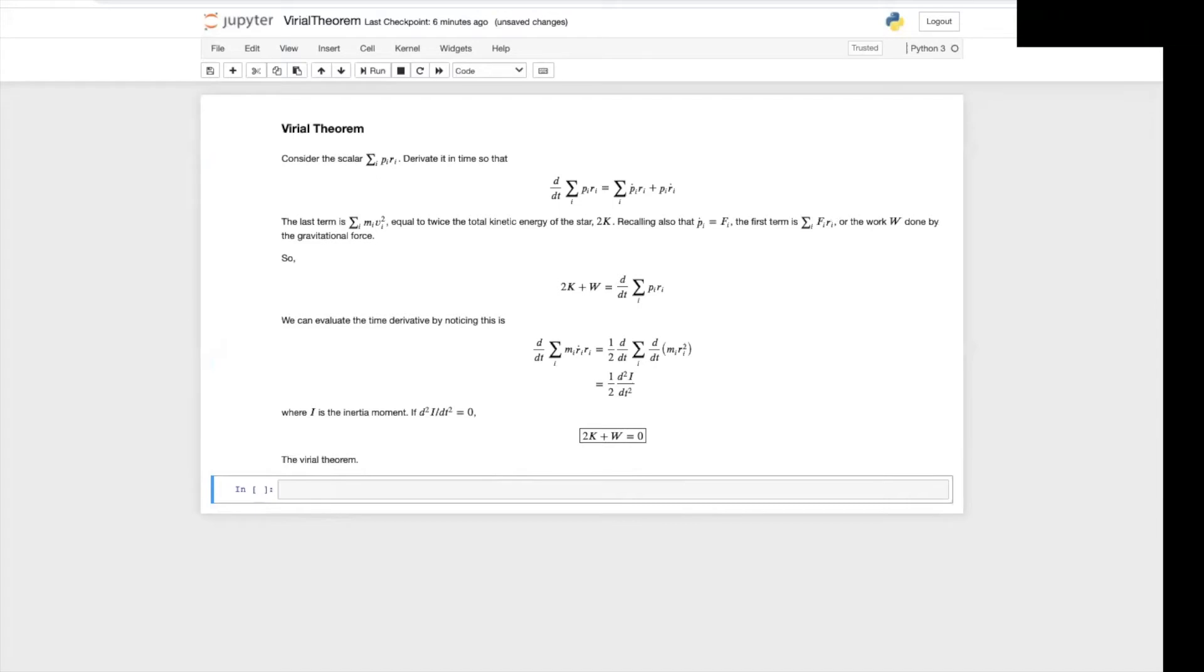So according to the Virial theorem, the total energy of the system is half the gravitational potential energy.